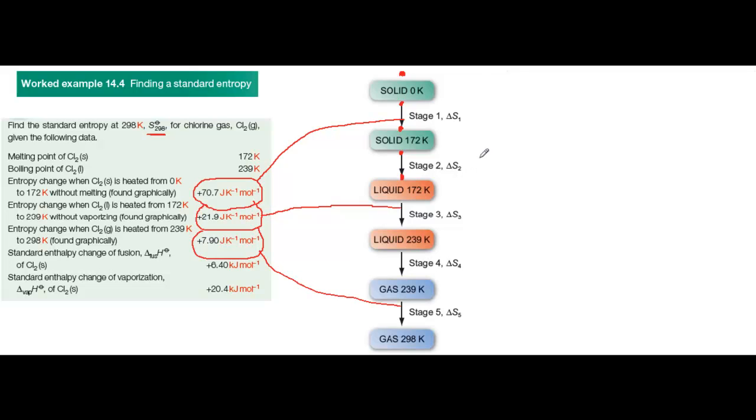Now we need to look at the entropy changes involved in changes of state. Let's look, for example, at the melting of the solid at 172 Kelvin. The entropy change for this stage is called the entropy change of fusion.